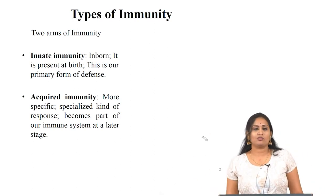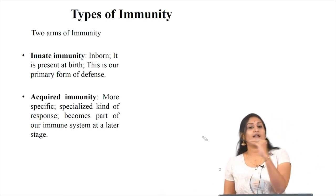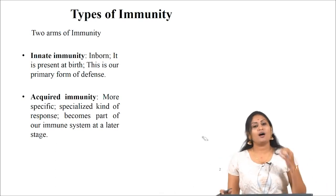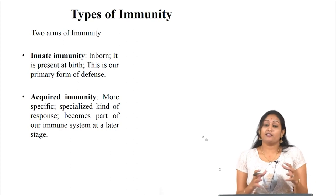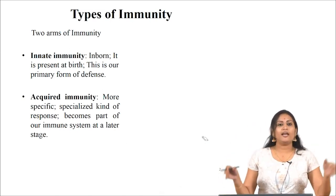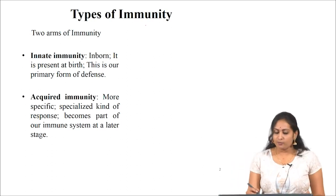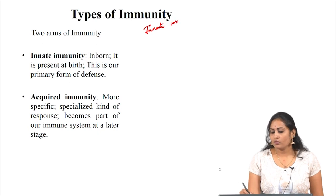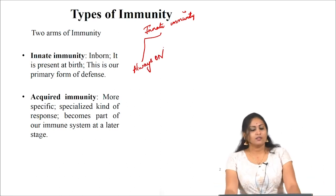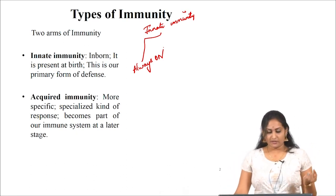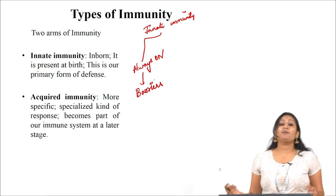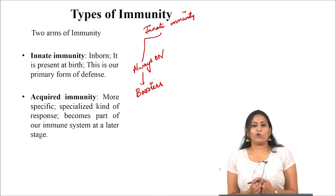There are two types of immunity: innate immunity and adaptive immunity. Innate immunity is the primary form of defense mechanism in our body. Our body itself has a very good defense force to act against pathogens that enter the body. Innate immunity is always on — it is present from birth as the primary form of defense and includes barriers.